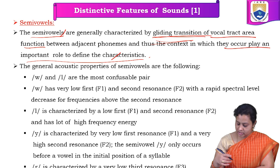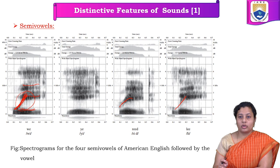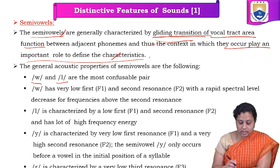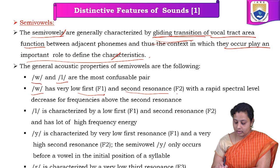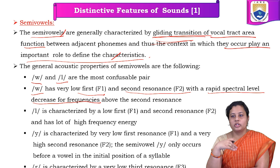From the spectrograms, we can observe that the 'v' sound and 'l' sound are more comparable because they have spectrograms very similar to each other. The 'v' sound has a low first formant frequency and a second formant with a rapid spectral level decrease for the frequencies. When we have the first formant frequency, it is very low, and for the second formant frequency the spectrogram is rapidly decreasing.